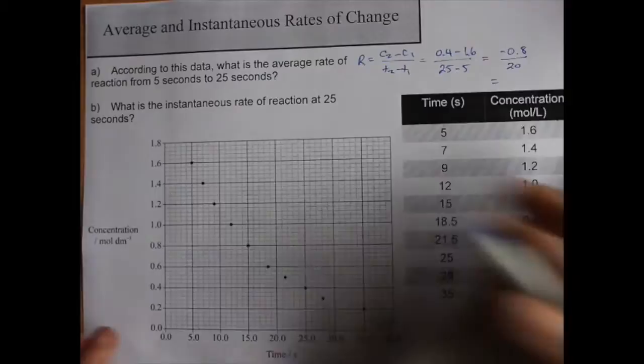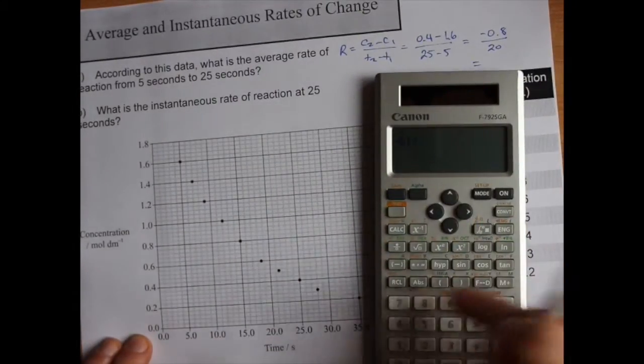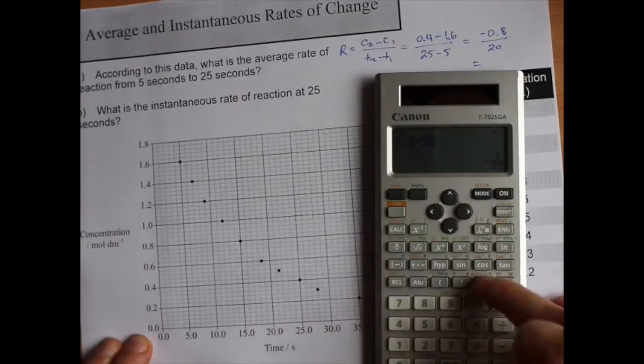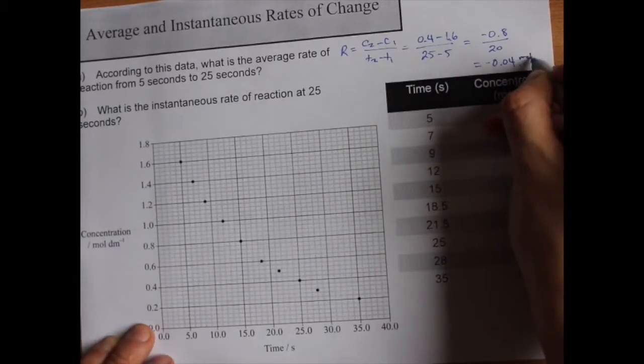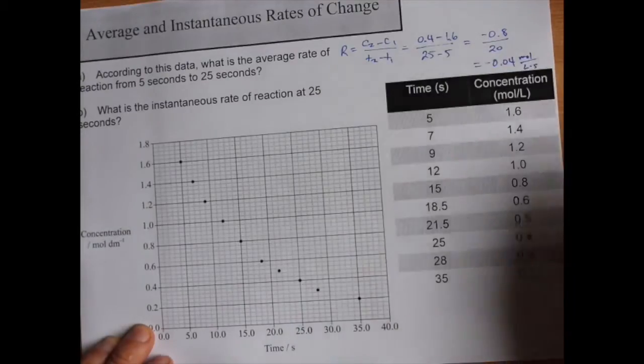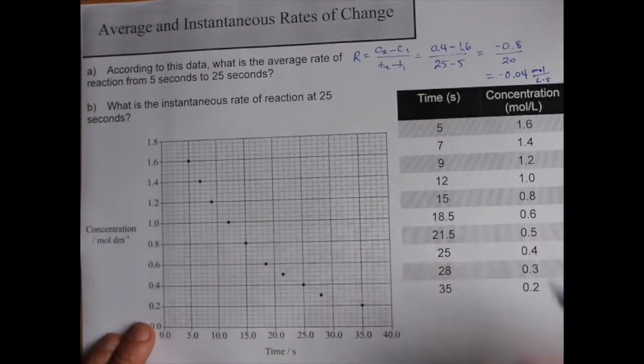So I end up with negative 0.8 moles per liter per 20 seconds. That gives me negative 0.8 divided by 20. That's negative 0.04 moles per liter per second. I'm just demonstrating that you can do this from a table just like you can from a graph.